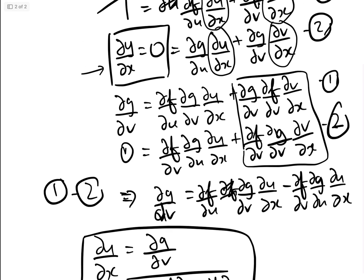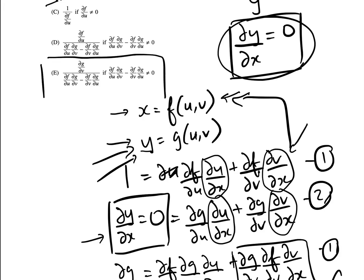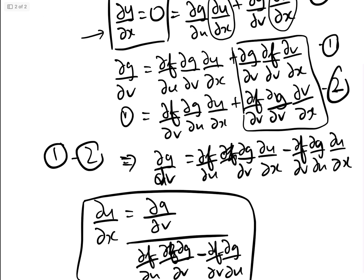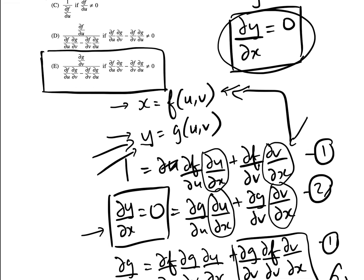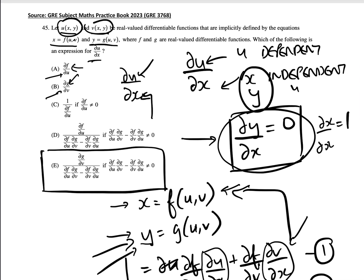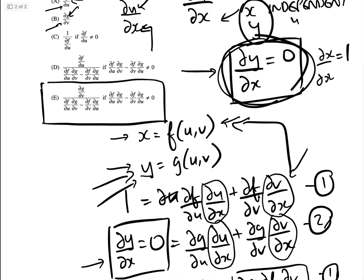And that is basically equal to answer E. So du/dx equals ∂g/∂v over (∂f/∂u · ∂g/∂v minus ∂f/∂v · ∂g/∂u) — that's the answer. It all comes from assuming x and y are independent variables because we're looking for the partial du/dx, so u is dependent, v is its partner, and x and y are the two independents. From that we know dy/dx equals zero. This question on the practice paper was only answered correctly by 20% of people — it's not easy, but once you have that key fact it's basically just a simple simultaneous equation.